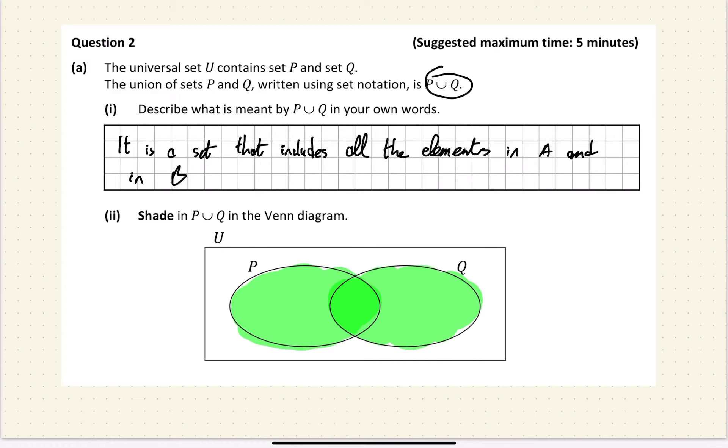A few of you, one mistake I noticed, was mixing up P intersection Q, which would be just the middle area shaded. Okay, but it was P union Q.